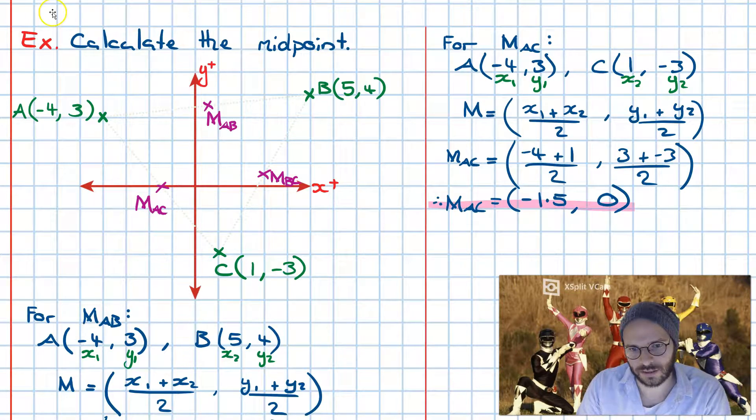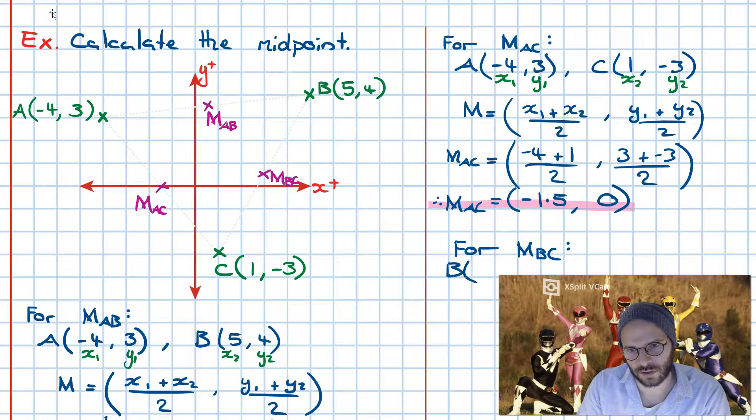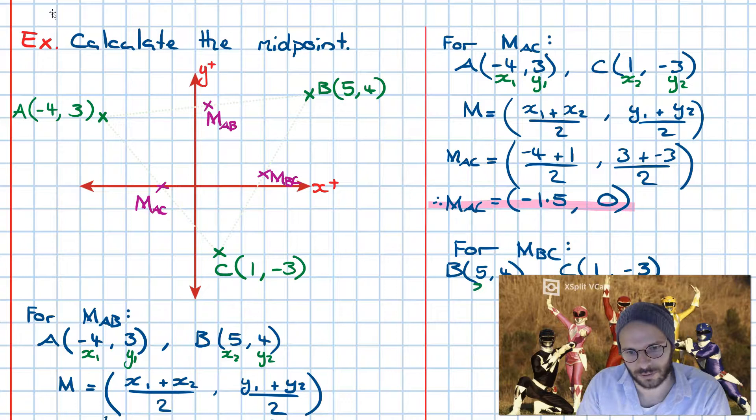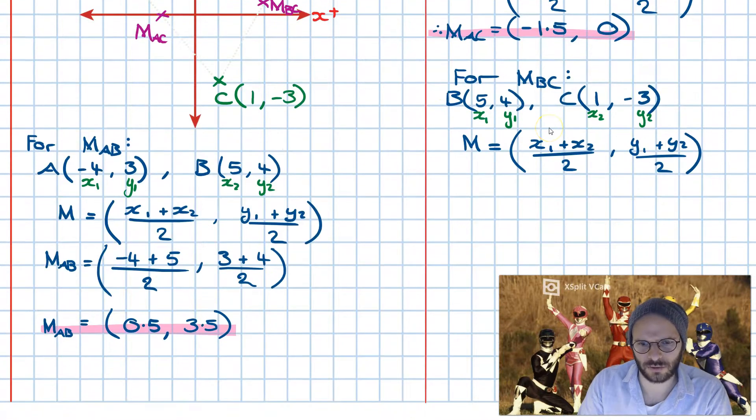Midpoint of BC. We write out the coordinates for point B—that's going to be 5 and 4—and the coordinates for C are still 1 and minus 3. Defining x1 and y1. Moving on, we're going to get midpoint. Like so. Then subbing in the values.